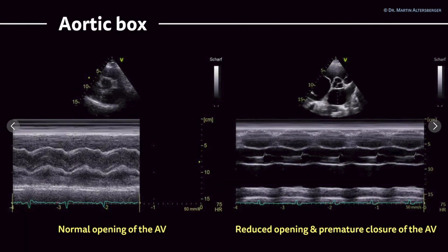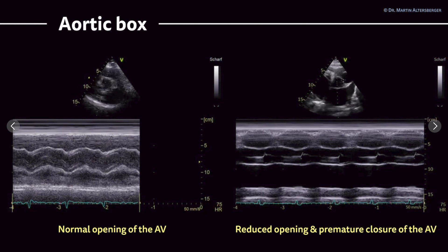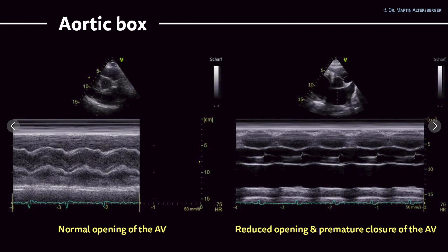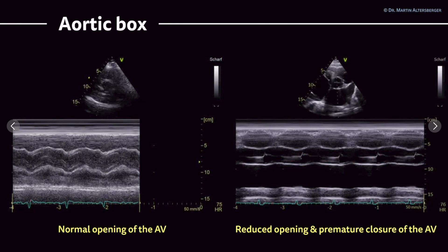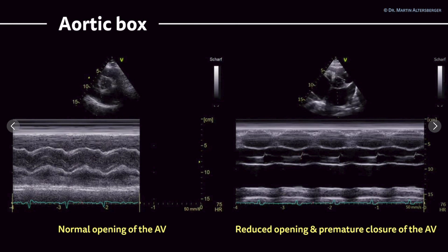The aortic box in a normal view — even with less good image quality — shows several boxes with normal opening of the aortic valve. In a pathological example, the opening is definitely reduced compared to the normal side, and the valve closes relatively quickly — that is a premature closure of the aortic valve, also visible in the B-mode image, pointing towards reduced left ventricular function. Note that the leaflets are not thickened here, so this is not aortic stenosis. Aortic stenosis with M-mode will be covered soon.